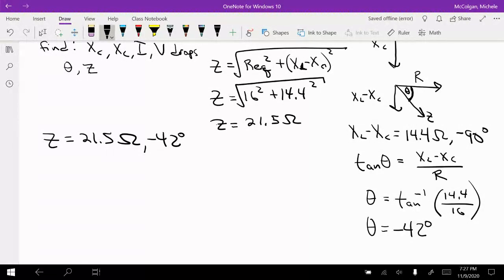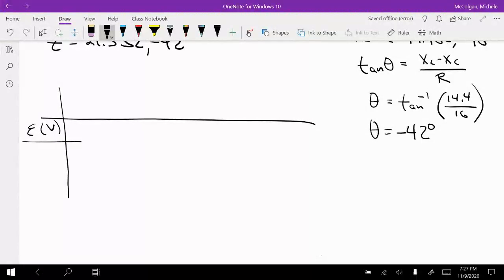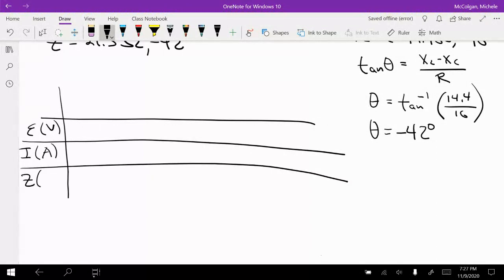Okay, so I'm going to make my table. So this is going to be my voltage in volts, my current. And I know the results. So usually I say milliamps, but I'm going to say it's in amps this time. And this is going to be my Z in ohms.